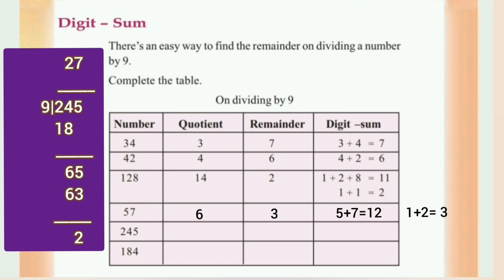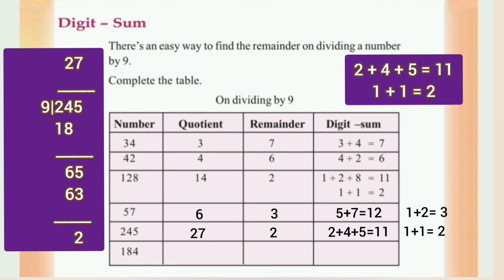245 divided by 9: 27 into 9 gives quotient 27 and the remainder is 2. The digits in the sum: 2 plus 4 plus 5 equals 11. Then 1 plus 1 equals 2. The remainder is 2 and the digits in the sum is also 2.